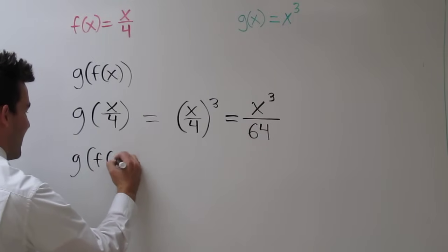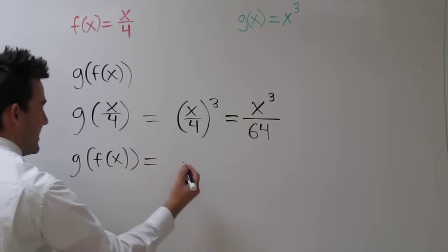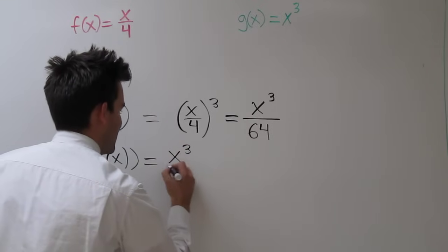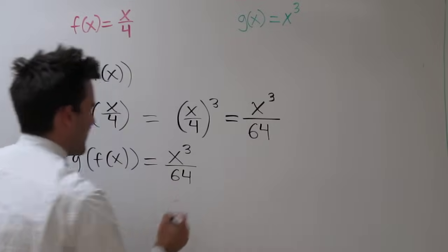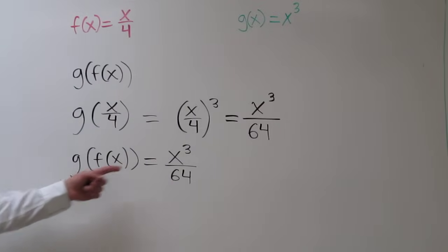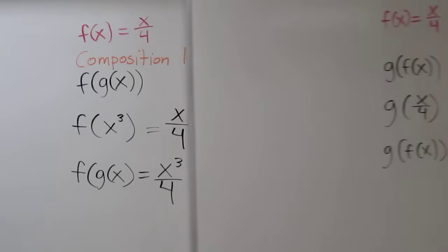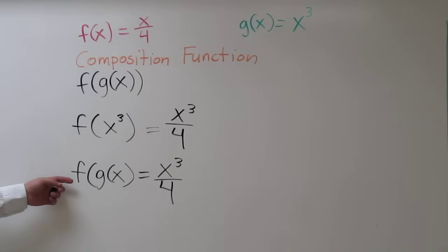So g of f of x is x cubed over 64. So let's compare g of f of x, x cubed over 64, to f of g of x, which is x cubed over 4. They're close, but they're different. Good luck.